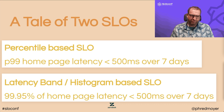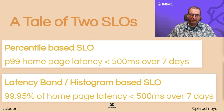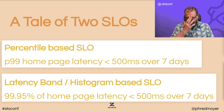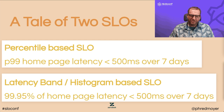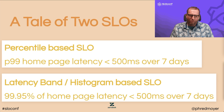Let's talk about SLOs. Most of you have read through the traditional material on the topic — the SRE book, the workbook, Alex's book that came out about a year ago. I see two types of SLOs: percentile-based SLOs, which use a P99 to define your homepage latency or some other type of request under a certain threshold over a time span, and what I call latency band or events or metric-based SLOs, which specify a percentage of requests coming in under a certain threshold over the same time span.